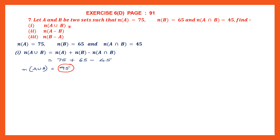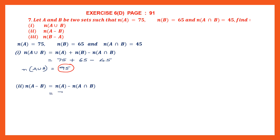We finished the first one. Now we must find the cardinal number of A minus B. The formula is: cardinal number of A minus cardinal number of A intersection B. We use A intersection B because that is given to us in the question. Substituting: 75 minus 45 is 30. We have found the cardinal number of A minus B, and that is 30.